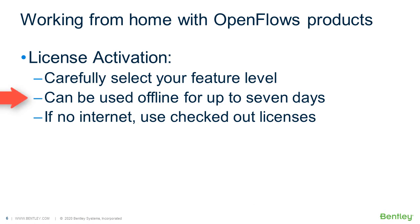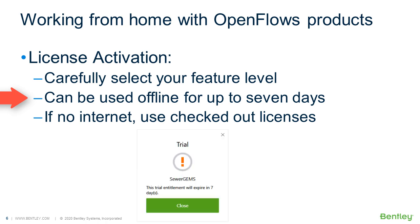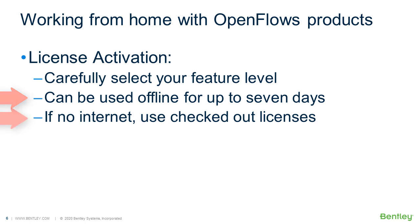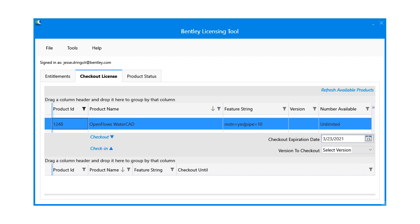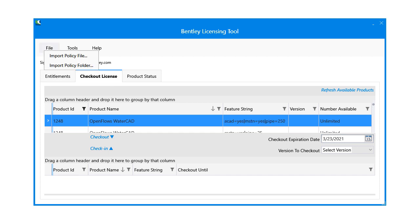While working remotely, if you have trouble with your network connection or if you do not have internet, the most recent Connect Edition versions of the OpenFlows products can be used offline for up to seven days without having to activate a license. If you need to be offline for longer than this, there is the possibility of reserving a license for offline use, also known as checking out. Your administrator can even generate a license file for this.